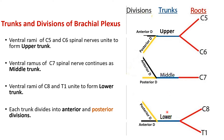The ventral rami of C5 and C6 unite to form the upper trunk. The ventral ramus of C7 continues as the middle trunk. The ventral rami of C8 and T1 unite to form the lower trunk.